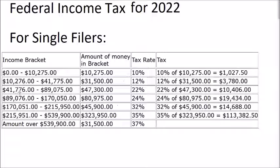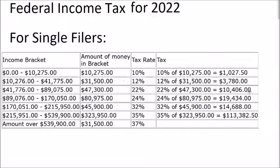The next bracket is $41,776 to $89,075. The difference between these two numbers is $47,300, and 22% of $47,300 is $10,406. And so on for the other brackets.